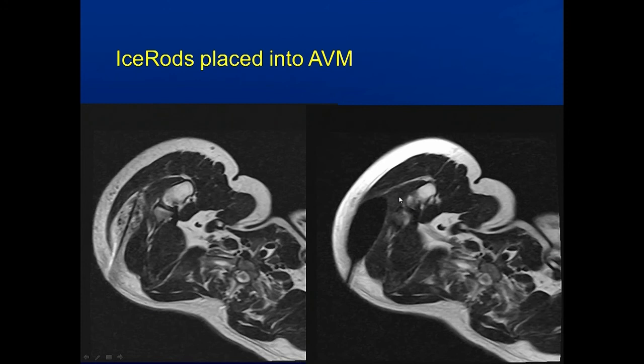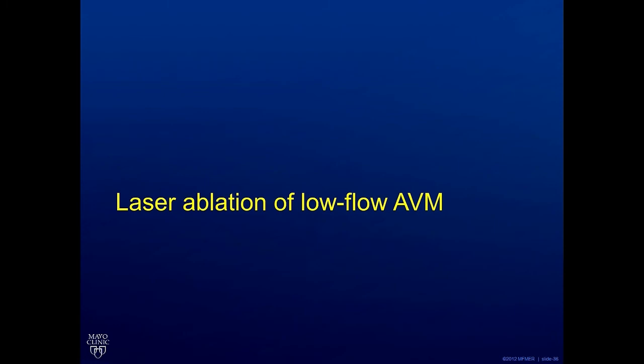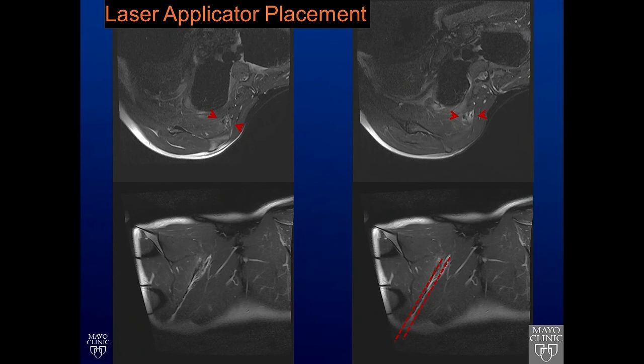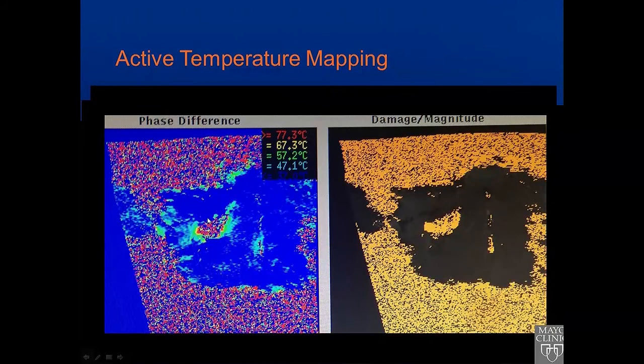The other method we bring to bear against vascular malformations is laser ablation. Here's a gentleman that has a very small lesion in the muscles of the right back and shoulder. We are able to target this by placing laser fibers into the lesion and then heating it up, watching the heating with the MRI and treating the lesion.